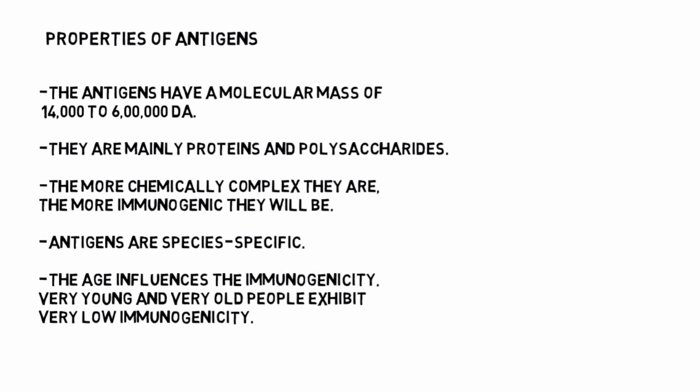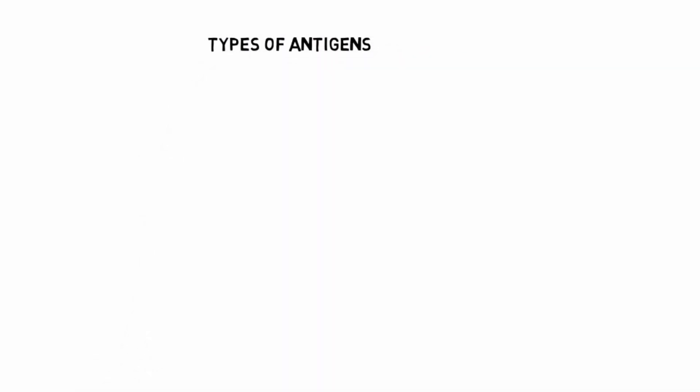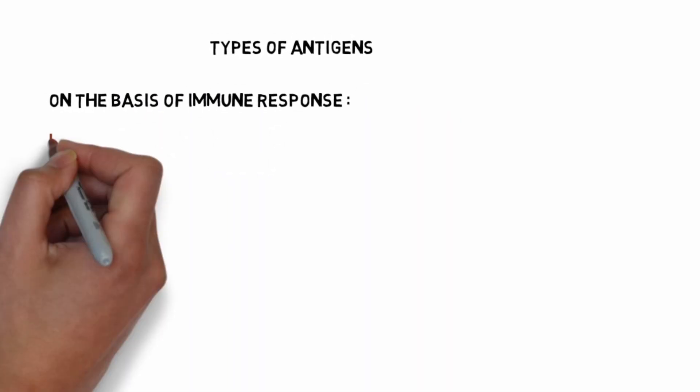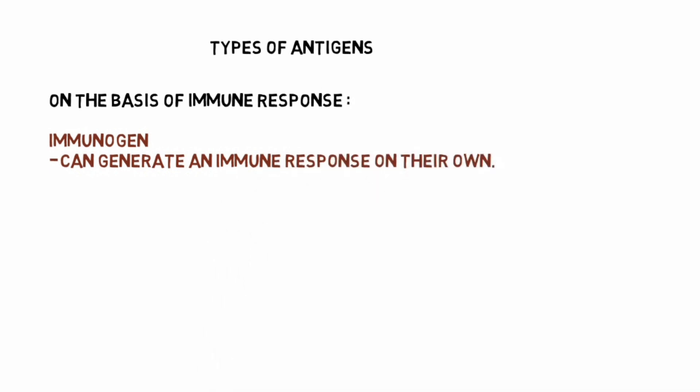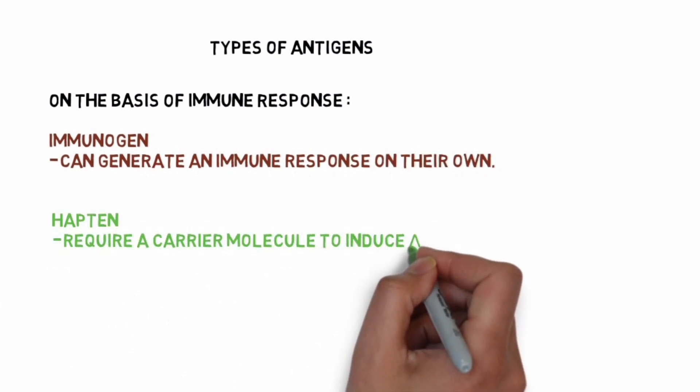Types of antigens on the basis of immune response: Immunogens can generate an immune response on their own, meaning they have their own antibodies. Haptens require a carrier molecule to induce an immune response - they do not have their own antibodies.